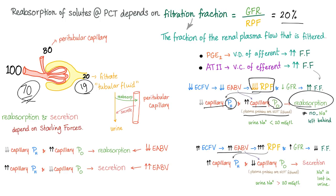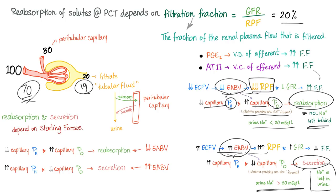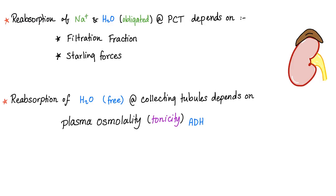When you have decreased effective arterial blood volume, sodium is reabsorbed and urine sodium is very low. When you have increased effective arterial blood volume, sodium is lost in urine and urine sodium is high. Reabsorption of sodium and water — water here is obligated — at the proximal tubule depends on the filtration fraction and Starling forces. But reabsorption of free water at the collecting tubule — water without electrolytes — depends on plasma osmolality or tonicity.